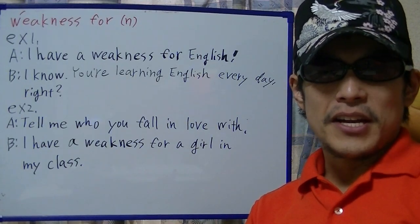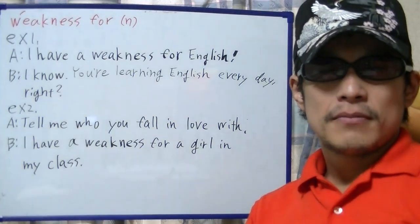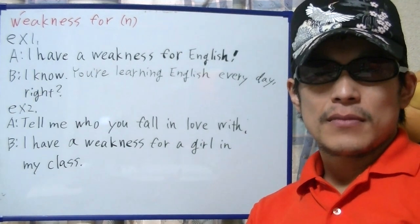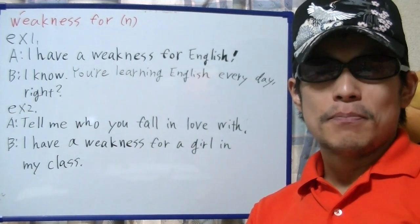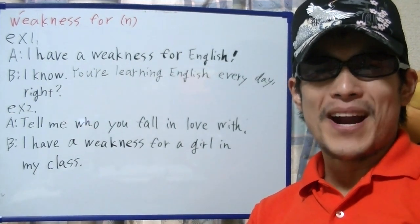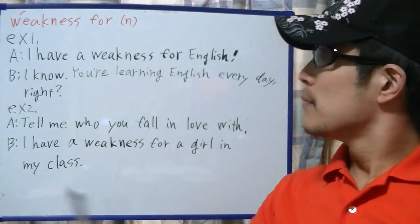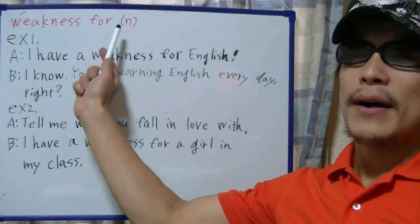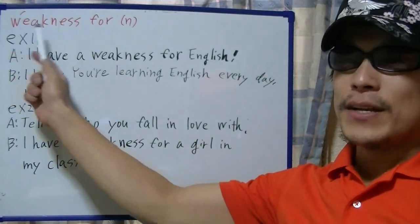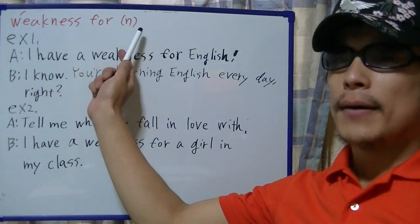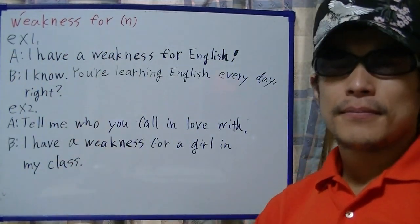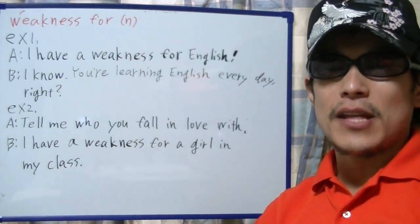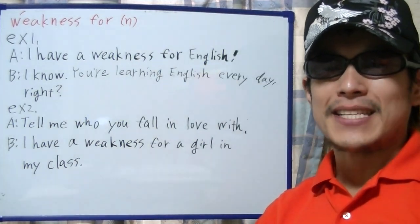Hi, I'm Takehiko. This is Brief English Practice. On this video, I'm going to practice an English noun: 'weakness for.' As always, let's get started and move on to some examples.